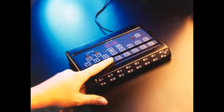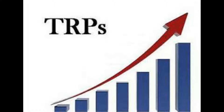For calculation of TRP, a device called people's meter is attached to the TV set in a few thousand viewers' houses for judging. This device records the time and the program that a viewer watches. Then the average is extracted from the record — the average is taken for a 30-day period, which gives us the viewership status for a particular channel.